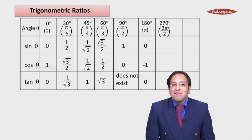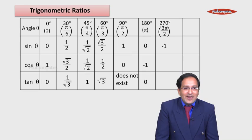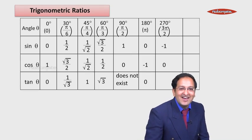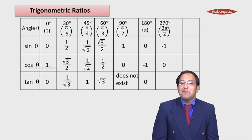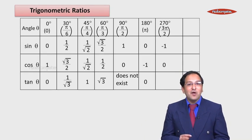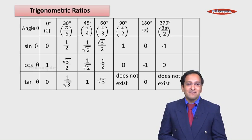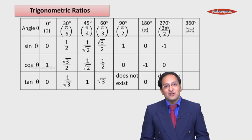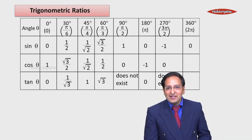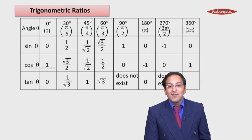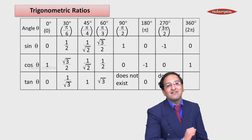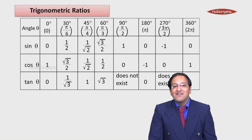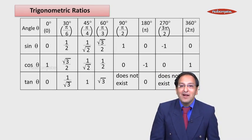Continuing the table: at 270° (3π/2): sin 270° = −1, cos 270° = 0, and tan 270° does not exist, because sin upon cos gives −1 upon 0, and a zero denominator means the answer does not exist. At 360° (2π): sin 360° = 0, cos 360° = 1, and tan 360° = 0, because sin upon cos gives 0 upon 1 which equals 0. These are all the trigonometric ratio values.